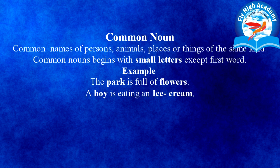Then common noun. Common names of person, animal, place or things of the same kind are called common noun. Common noun begins with a small letter except the first word. Common noun भी किसी person, animal, place or thing का नाम होता है, लेकिन ये non-specific होता है। For example, 'The park is full of flowers' — park का कोई specific नाम नहीं है, non-specific है। 'Boy is eating an ice cream' — boy किसी जाति का नाम है और ice cream भी किसी जाति का नाम है, इसलिए हम उसे common noun बोलते हैं।